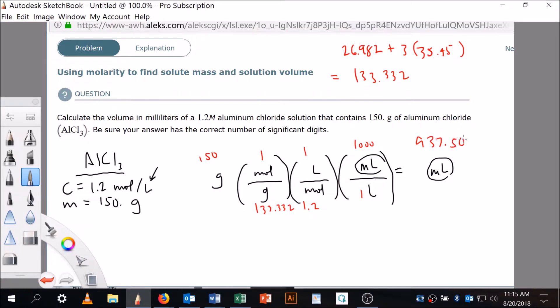Now this is two sig figs, this is three sig figs, and these are all more, so it looks like this is gonna be two sig figs. So this needs to be reported as 940 mL.